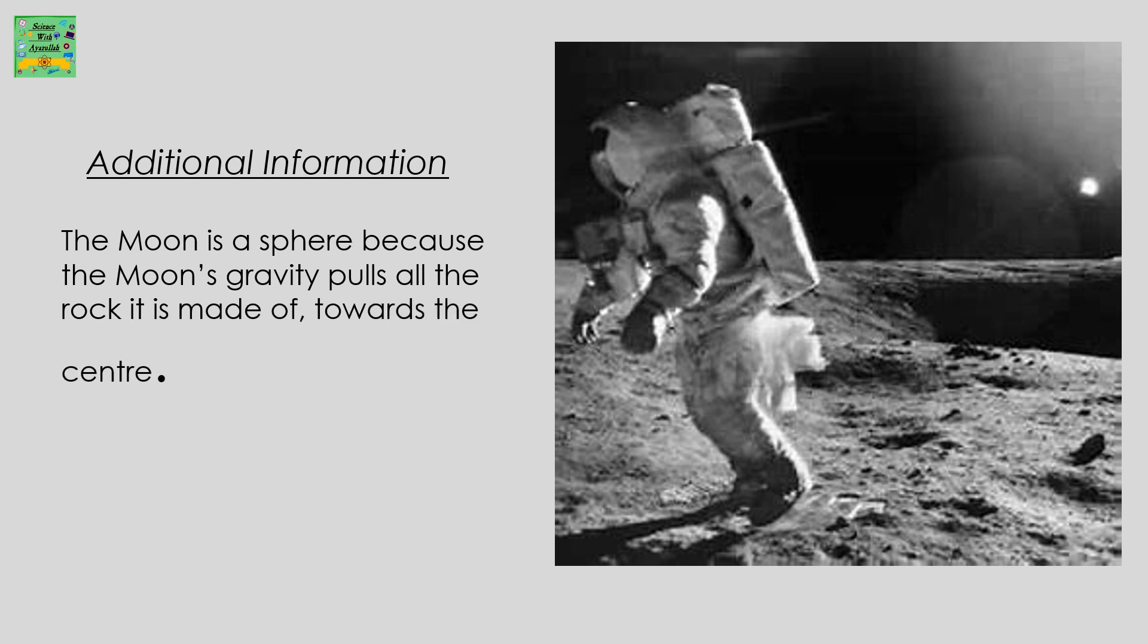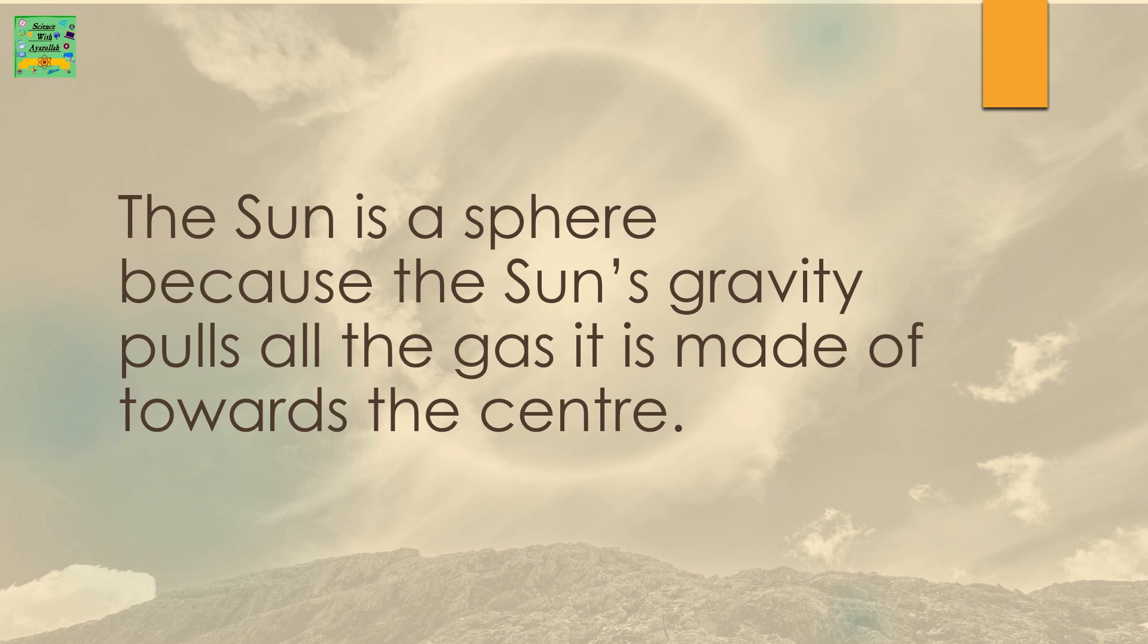The Moon is a sphere because the Moon's gravity pulls all the rock it is made of towards the center. The Sun is a sphere because the Sun's gravity pulls all the gas it is made of towards the center.